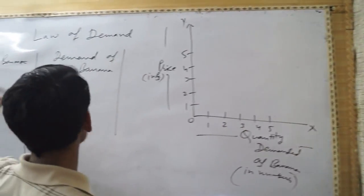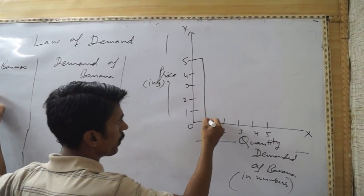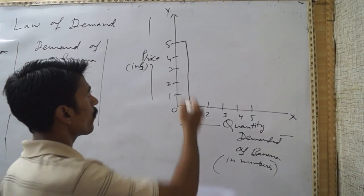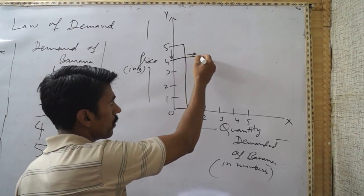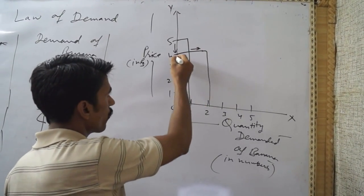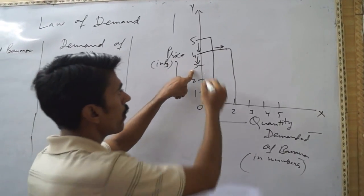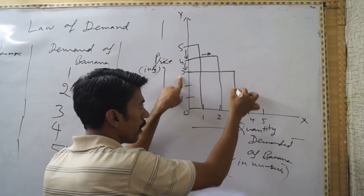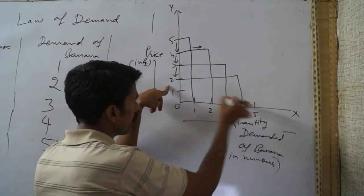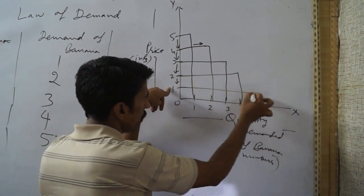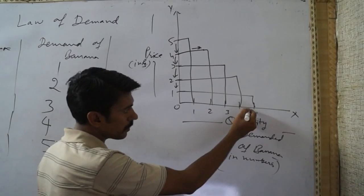So when the price is five, I am just demanding one banana. If price decreases one unit, I am increasing the demand to two. On the next decrease from four to three, I am increasing the demand. Price is decreasing, demand is increasing. Like this, if price rises, demand will decrease.